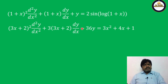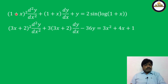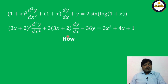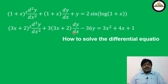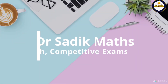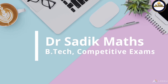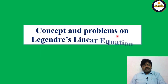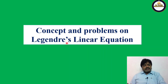So far we have learned the differential equation with variable coefficients of the form x² d²y/dx² + x dy/dx + y = f(x). Now here we have (1+x)² as coefficient, and (1+x) as coefficient of dy/dx. In the second problem we have (3x+2)² and (3x+2). Today we discuss the concept and problems on Legendre's linear equation.